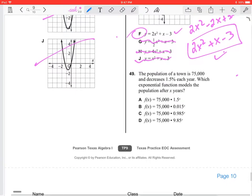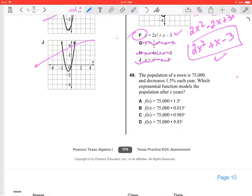Number 49 says: the population of a town is 75,000 and decreases 1.5% each year. Which exponential function models the population after x years? Okay, we have our starting value, so our a value is 75,000. All of these have 75,000, so that should have been a given.